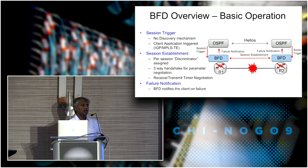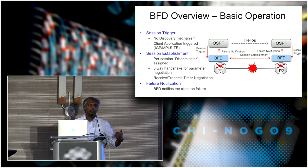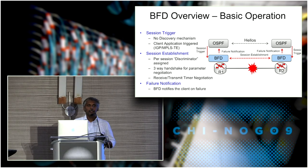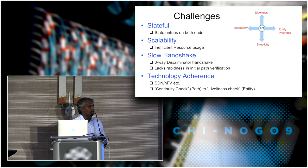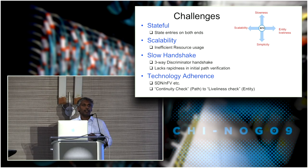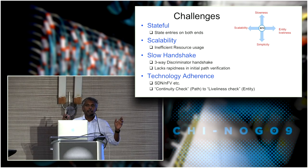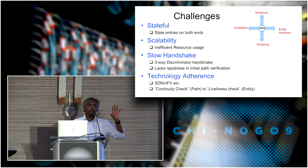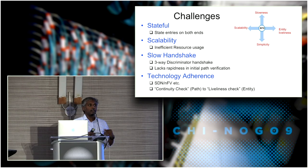So why do we need seamless BFD? Over a period of about 20 years, based on deployment and use cases, a couple of challenges have been observed. One is the stateful nature of BFD — a combination of your discriminator and my discriminator identifies each session, and depending on the number of sessions between two endpoints, these state entries must be maintained on both the initiator and target node, eventually creating a scalability issue.